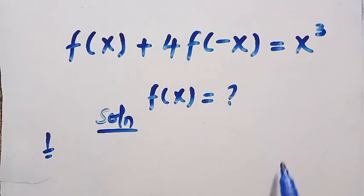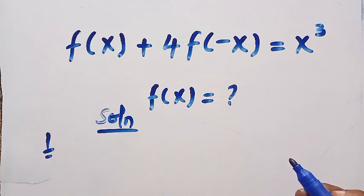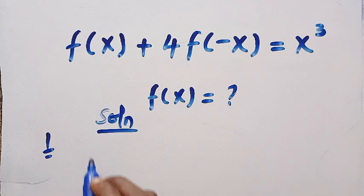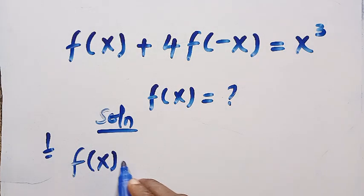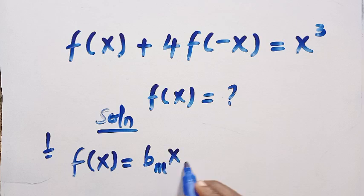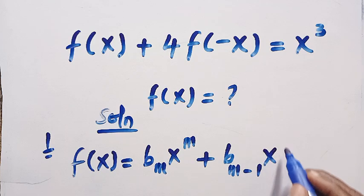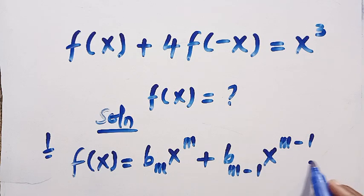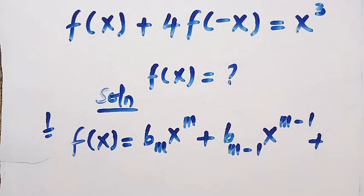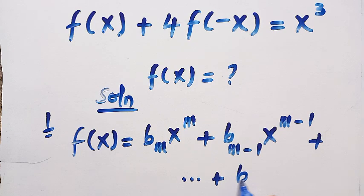By general algebraic form — since what we have on the other side is x³, what if we were given any other function? How can we apply the general format? Suppose I consider a general function f(x) = bm·xᵐ + b(m-1)·x^(m-1) + b(m-2)·x^(m-2) + ... + b0. The function terms decrease based on the degree.